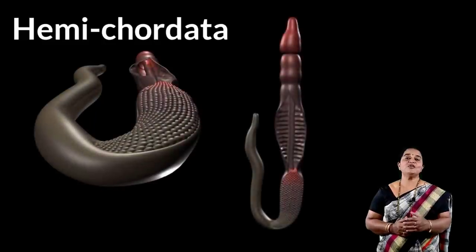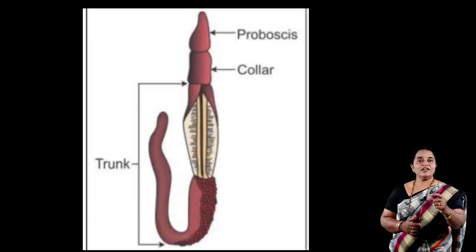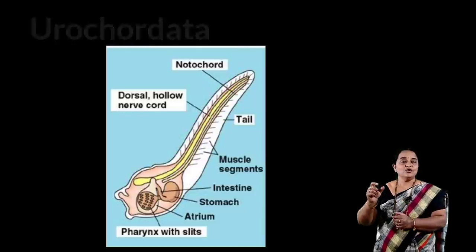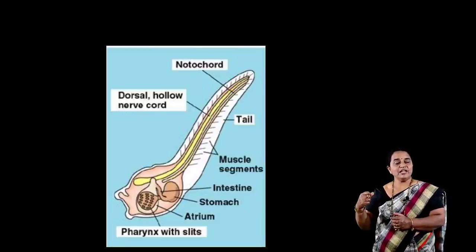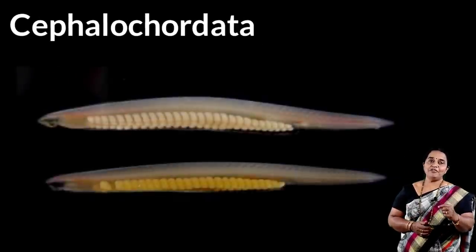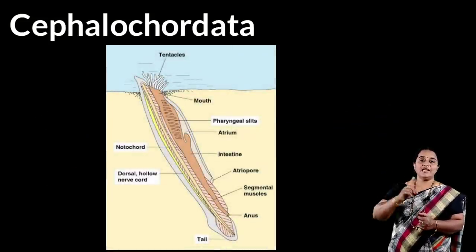Moving to echinoderms — exclusively marine animals. The body is protected by spiny skin. They have a water vascular system and tube feet for locomotion. Next is the connecting link between non-chordata and chordata — hemichordata, example Balanoglossus. The body is divisible into proboscis, collar, and trunk, having lateral gill slits and proboscis glands for excretion. Urochordata is the first group in chordata, having notochord towards the tail region in embryonic life. Moving to cephalochordata, example Amphioxus, where notochord persists from head to tail region. In vertebrata, notochord is replaced by vertebral column.